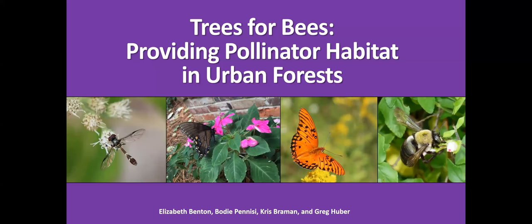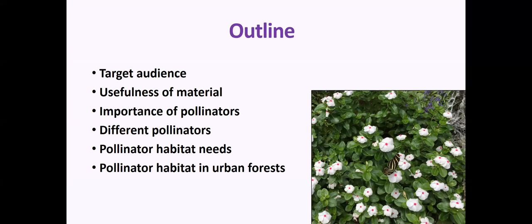Thank you so much for being here this afternoon. I'm very excited to be talking to you about trees for bees and ways that we can provide pollinator habitat in our urban and suburban forest. As a brief outline, I'll talk about the target audience, the usefulness of the material, the importance of pollinators, different types of pollinators we might expect to see, and then some pollinator habitat needs, including specific trees we can provide in our urban forest to benefit them.